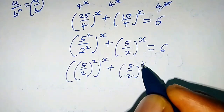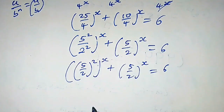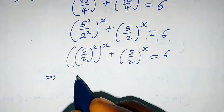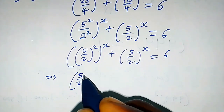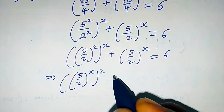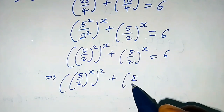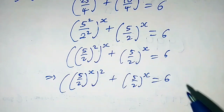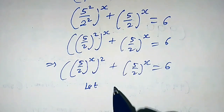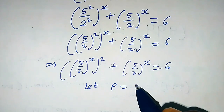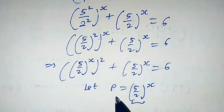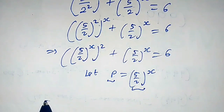The base (5/2) squared to the power x can be rewritten as (5 over 2) raised to the power 2x. So we have (5/2) raised to the power 2x plus (5/2) raised to the power x equals 6. Now let's assume p equals (5 over 2) raised to the power x. Wherever we see this expression, we replace it with p.